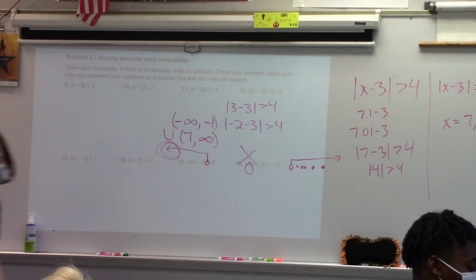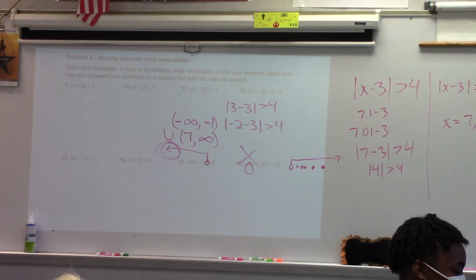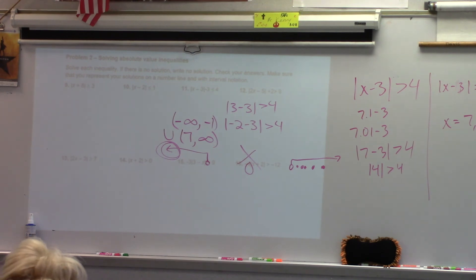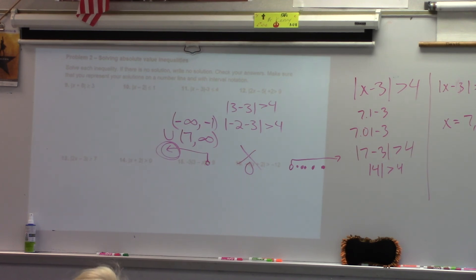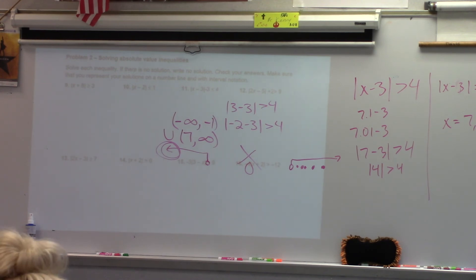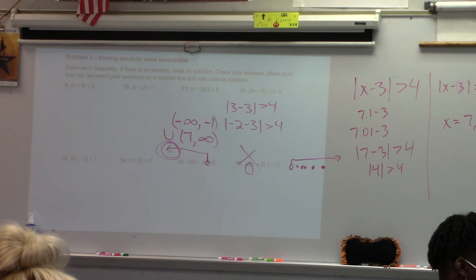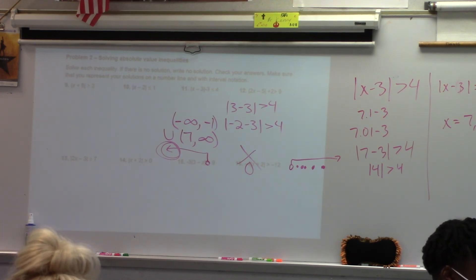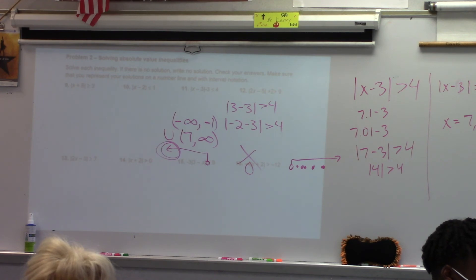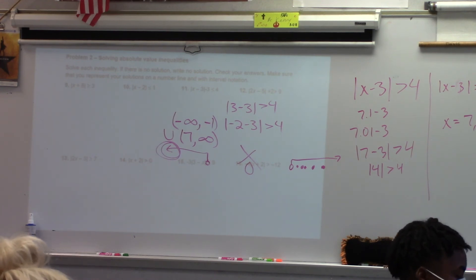For number 10, we're looking at the absolute value of x minus 2 less than or equal to 1. What this is really saying is we want every point such that the distance from 2 is less than or equal to 1. The highest you could go is 3 — that's 1 unit away from 2 — and the lowest you could go is 1, which is also 1 unit away from 2. Notice with number 11, we get down to the absolute value of x minus 3 less than or equal to 4 — I want every point less than 4 units away from 3.